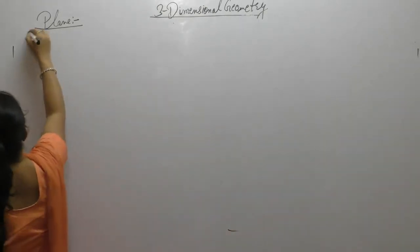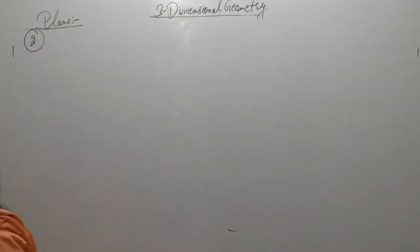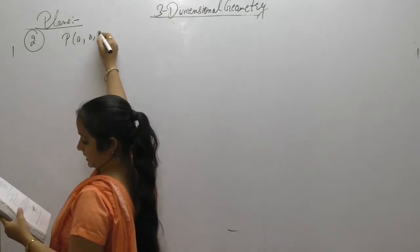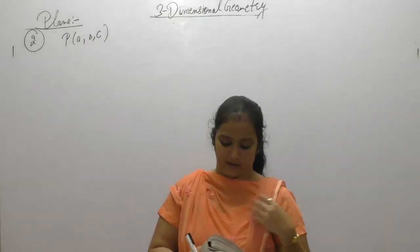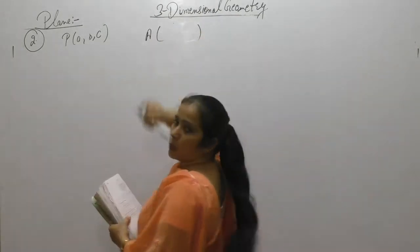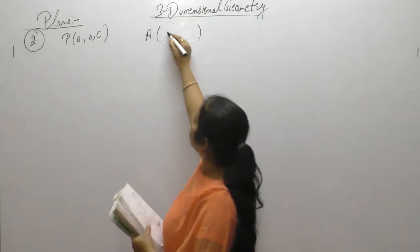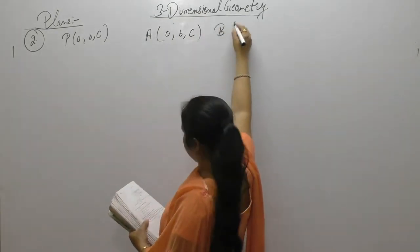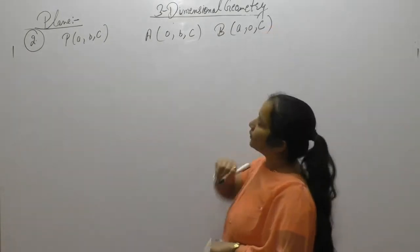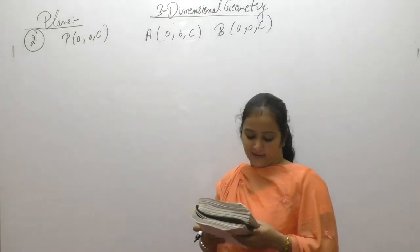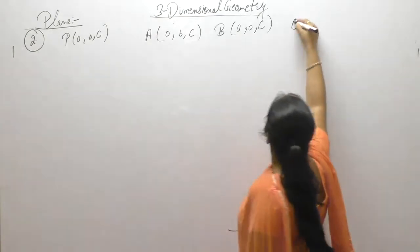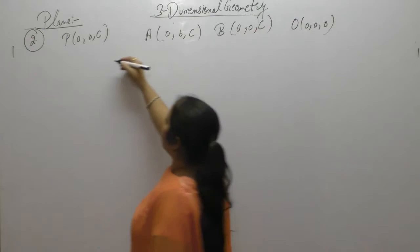The next question: From a point P(a, b, c), perpendiculars PA and PB are drawn to the YZ and ZX planes respectively. Since PA is drawn to the YZ plane, point A has x-coordinate 0, so A = (0, b, c). Since PB is drawn to the ZX plane, point B has y-coordinate 0, so B = (a, 0, c). Find the vector equation of plane OAB, where O is the origin.